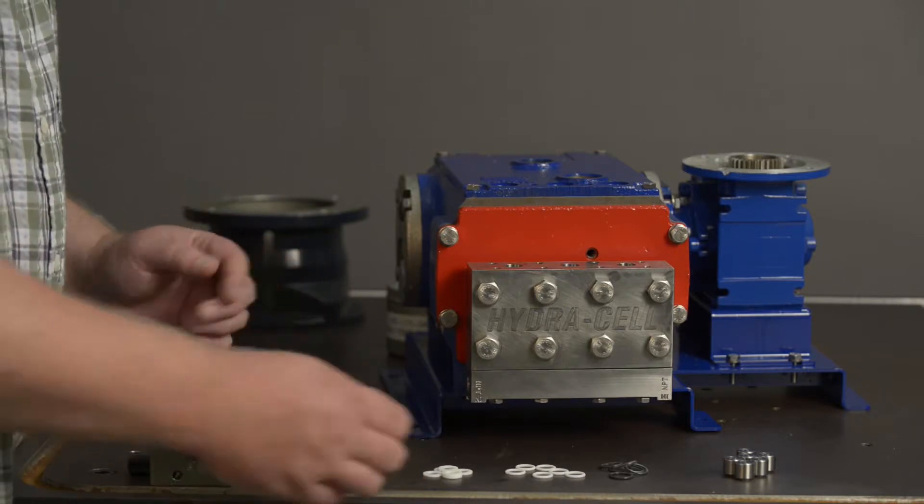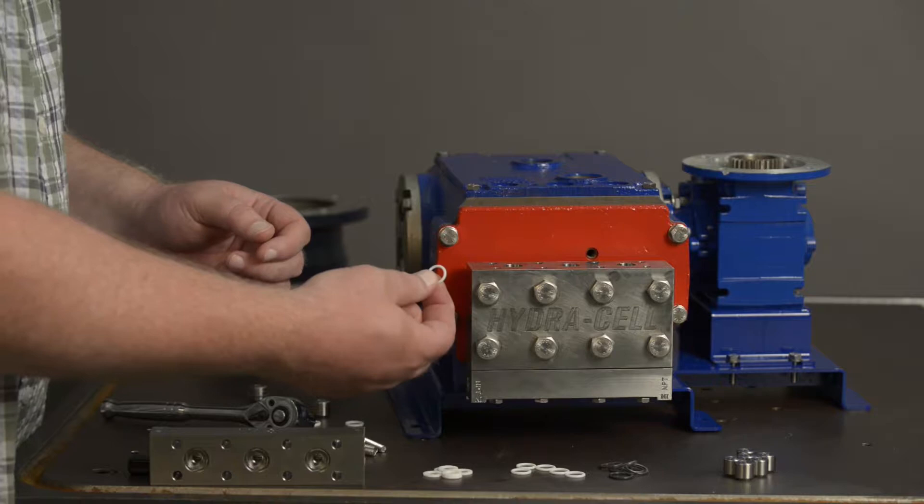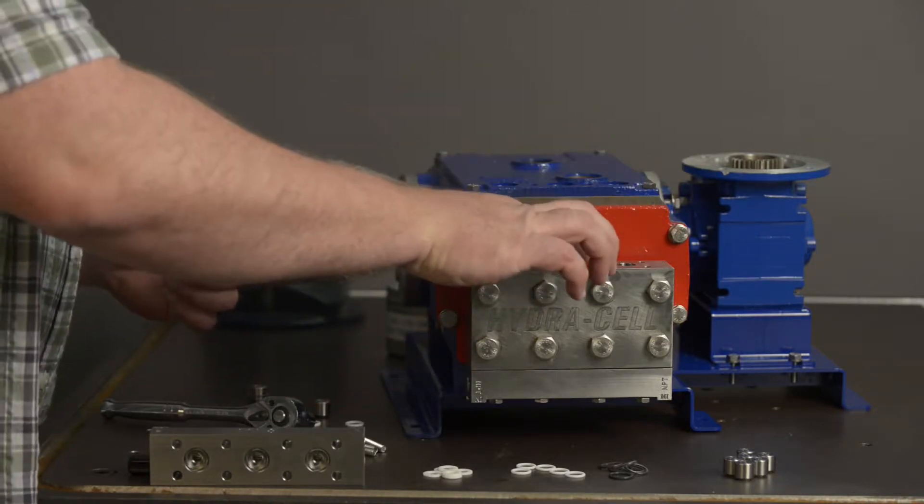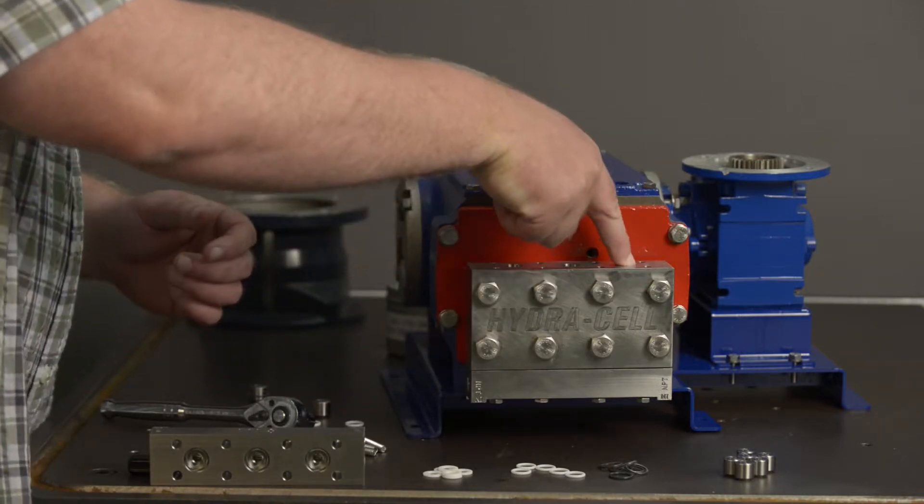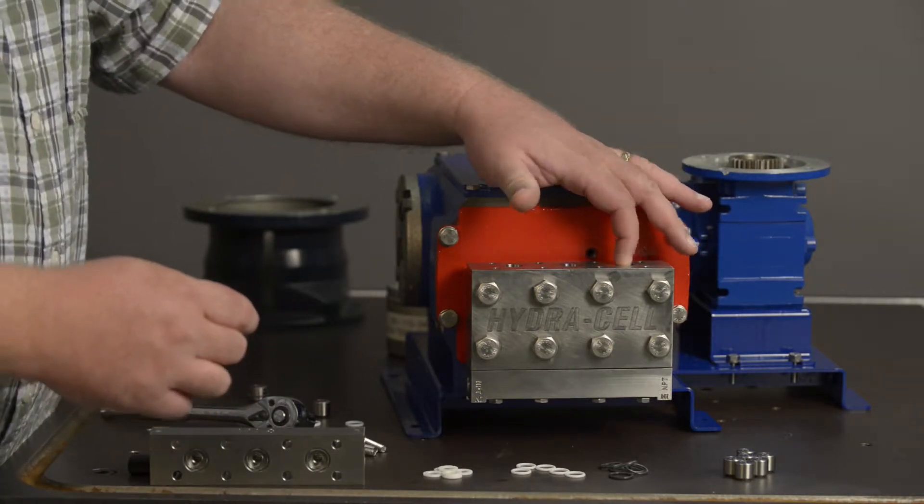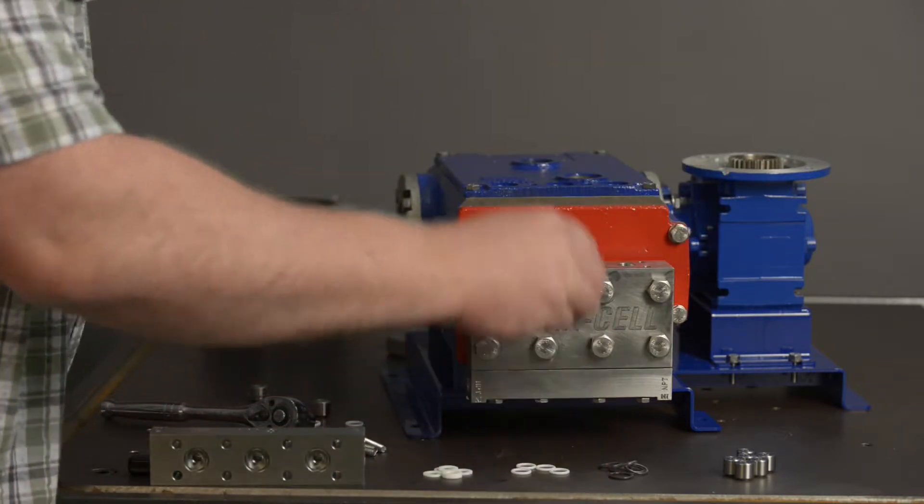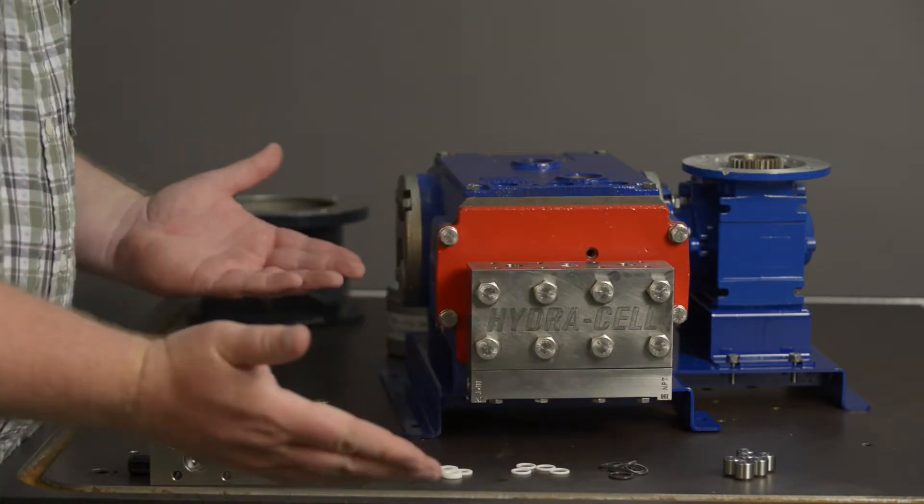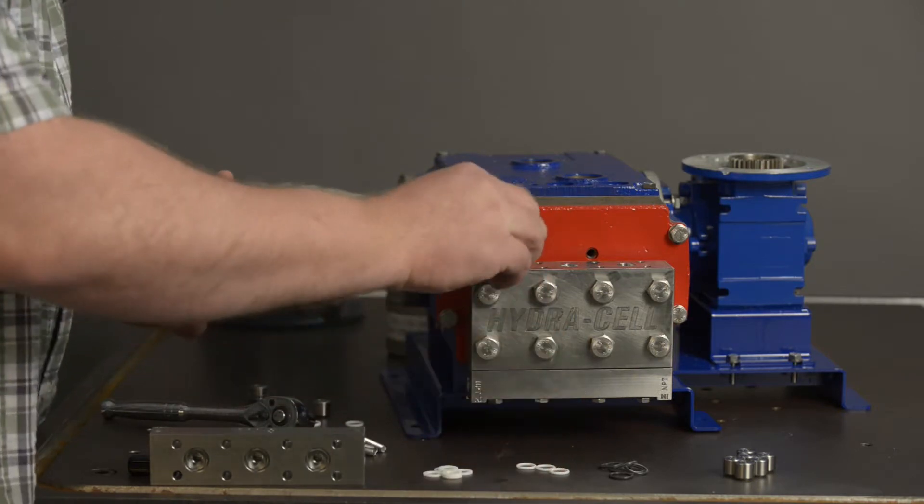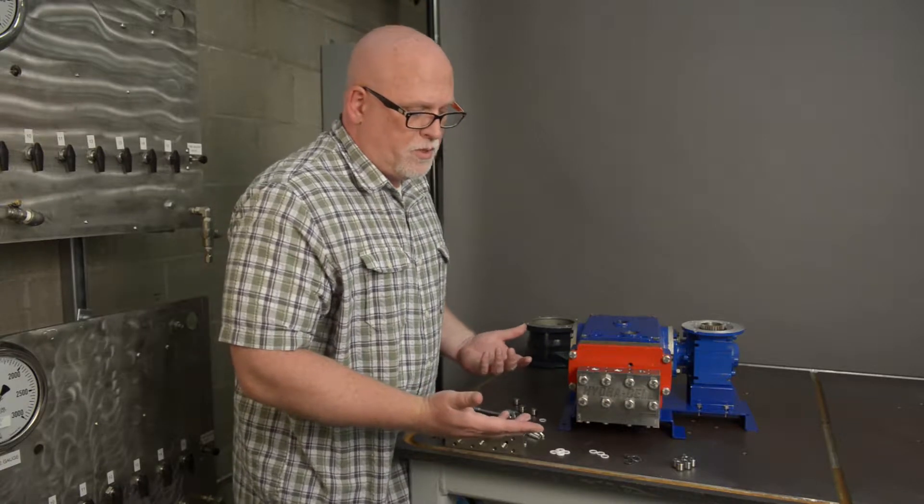So first things first. You want to grab your PTFE o-ring and install those into each one of the top ports. Now they won't install all the way down to the bottom necessarily and that's okay. Just make sure that they are down inside of the port and not sitting on top of the manifold and you can do that very easily just with the pressure of your finger. Very easy to install.